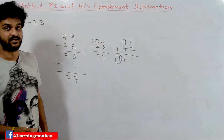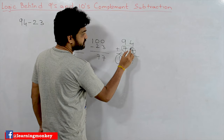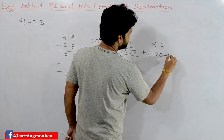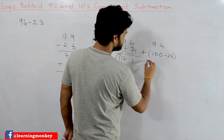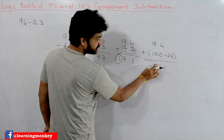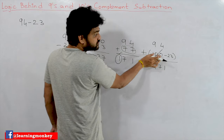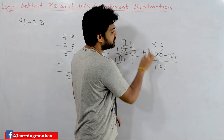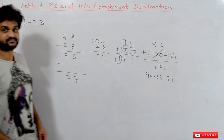This 1 is in the hundreds position, so eliminating it means we are removing 100 from the number. To understand this better: 77 was obtained as 100 minus 23. So 94 plus (100 minus 23) gives 171. We said we remove that 100, meaning we remove the hundreds-position digit. From the calculation, removing 100 leaves us with 94 minus 23, which equals 71 — the correct result.